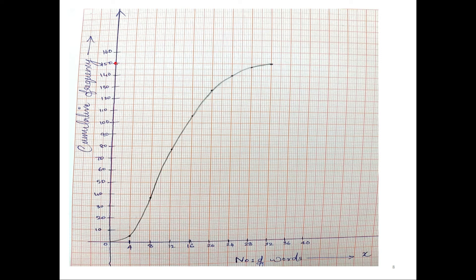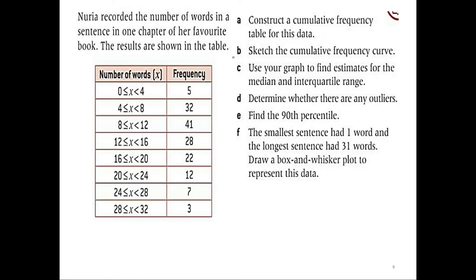Remember, 150 is where you have the highest value. Now your cumulative frequency graph is done. Since we are using a freehand drawing method, there can be slight variations in your drawing, so we are just estimating for the median and interquartile range.